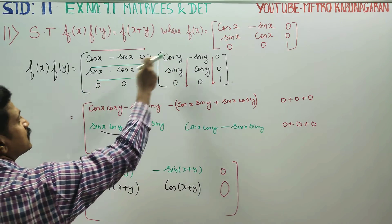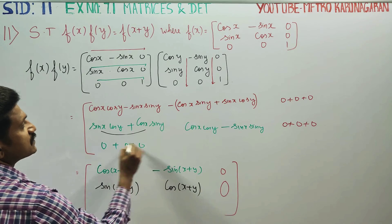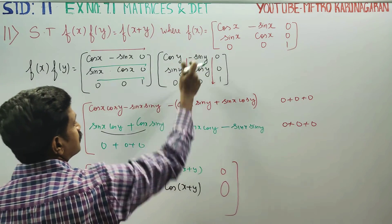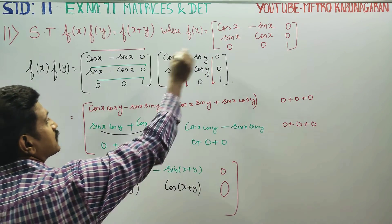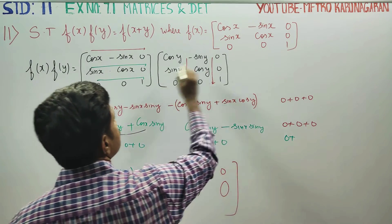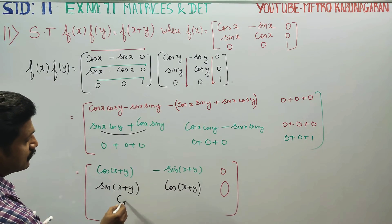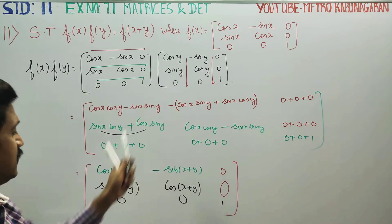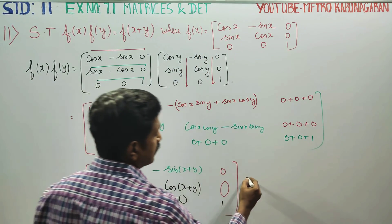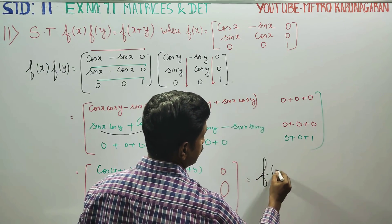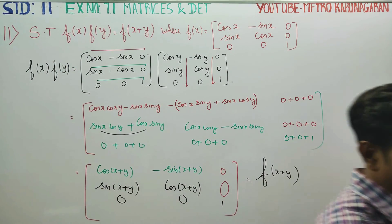Row into column for the third row: 0 into cos y is 0, 0 into sin y is 0, 1 into 0 is 0; then 0 into sin y is 0, 0 into cos y is 0, 1 into 0 is 0; finally 0 into 0 is 0, 0 into 0 is 0, 1 into 1 is 1. This gives us f(x+y), proving f(x)·f(y) = f(x+y). Thank you.